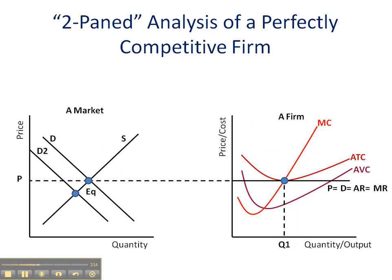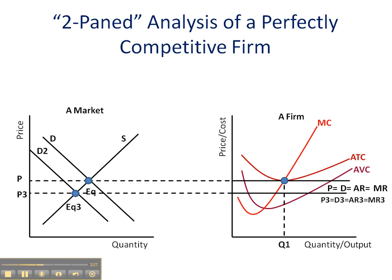What happens if demand falls to position D2 in the market and the market price drops from P to P3? Again, we transfer that price over to our firm. The firm has to take that price at P3 equal D3 equal AR3 equal MR3. We find the firm's new profit maximizing rate of output at MC equal MR3, associated with Q3 level of output. We take our line up to the average total cost curve to determine the firm's loss, which I've shaded in. Again, this is review.